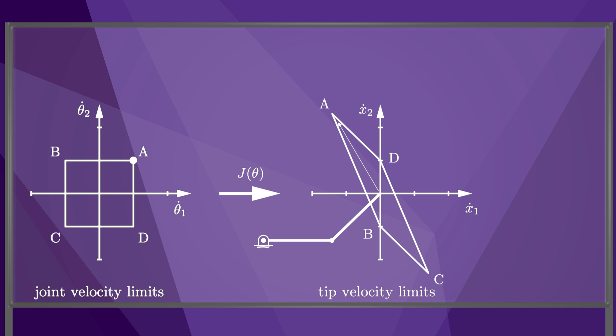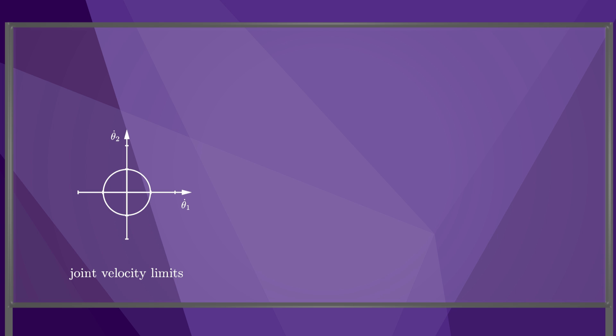The Jacobian, and therefore this parallelogram, depends on the joint angles theta. Instead of a square of possible joint velocities, it is common to consider a circle, or more generally a sphere, of possible joint velocities.